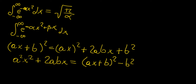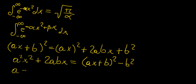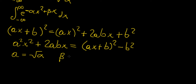Now that we've put it into this form, we can see that this is a quadratic of the same form. Essentially, a is going to be the square root of alpha, because we have a² here. And then this term here is going to be equal to beta, so beta equals 2ab, which means b equals beta over 2 times square root of alpha.